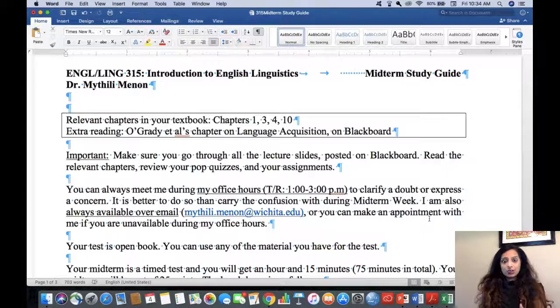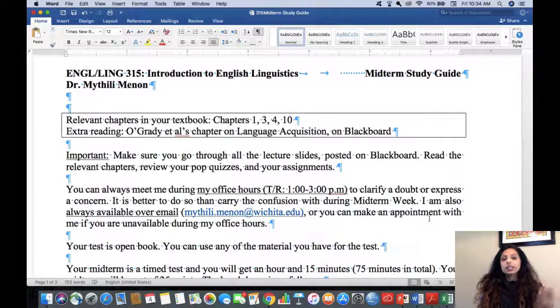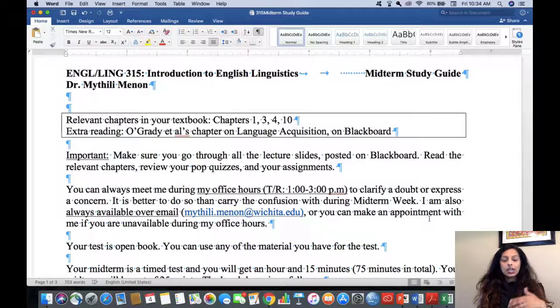I want to walk you through this because this is predominantly going to be what you're using while studying for the midterm. The relevant chapters in your textbook are chapters 1, 3, 4 and 10. Chapter 1 for linguistics as cognitive science, 3 for phonetics and phonology, 4 for morphology and 10 for child language acquisition.